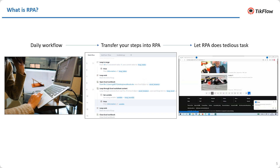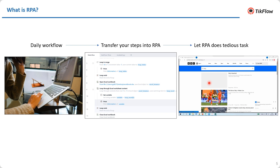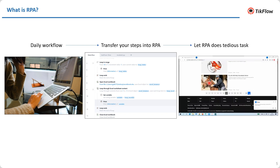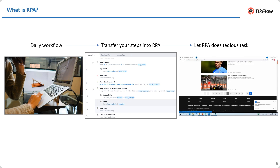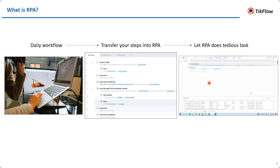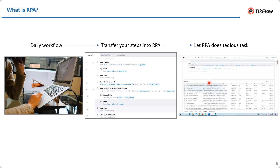For example, I would like to extract data from bbc.com — input a keyword and click search, then get all the news titles. The robot extracts all the news titles and saves them into a spreadsheet. The idea of this whole tutorial is to teach you how to make this transformation from your work into an RPA script.